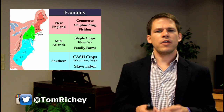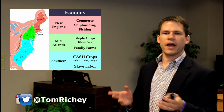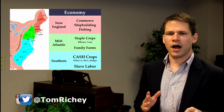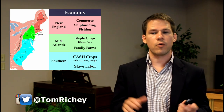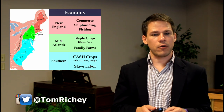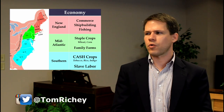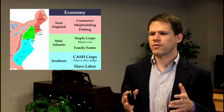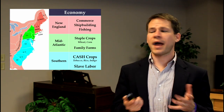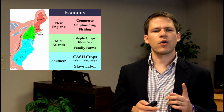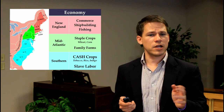In the southern colonies, the economy is based on cash crops — tobacco, rice, and indigo. Rice was expensive at the time because only certain places could grow it, and the Low Country in South Carolina was one of those. These cash crops were predominantly harvested by slave labor. Not everybody in the South was a slave owner, but most of the money was made at large plantations growing these cash crops. Tobacco was especially important in North Carolina and Virginia.